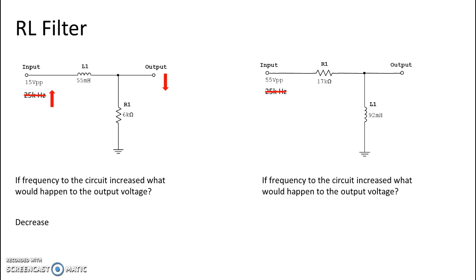Let's try it again on the next circuit, which is a high-pass RL filter, and the same question: if frequency to the circuit increased, what would happen to the output voltage? This is a high-pass filter — it's going to pass high frequencies — so the higher the frequency goes, the larger the output goes. We're expecting our output voltage to go up. From a math perspective, if the frequency goes up, the inductive reactance goes up. That component is right between our reference point and our output — our red point — so we read its voltage. Since the inductive reactance of L1 goes up, the voltage of L1 goes up, and so it makes sense that the output voltage should go up.